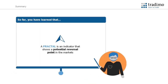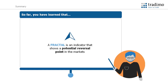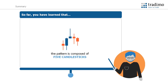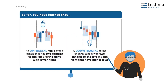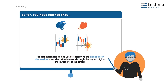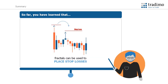So far, you have learned that a fractal is an indicator that shows a potential reversal point in the markets. They form when a particular price action occurs on a chart. The pattern is composed of five candlesticks. An up fractal forms over a candle that has two candles to the left and right with lower highs. A down fractal forms under a candle with two candles to the left and the right that have higher lows. Fractal indicators can be used to determine the direction of the market when the price breaks through the highest high or the lowest low of the pattern. Fractals can also be used to place stop losses.